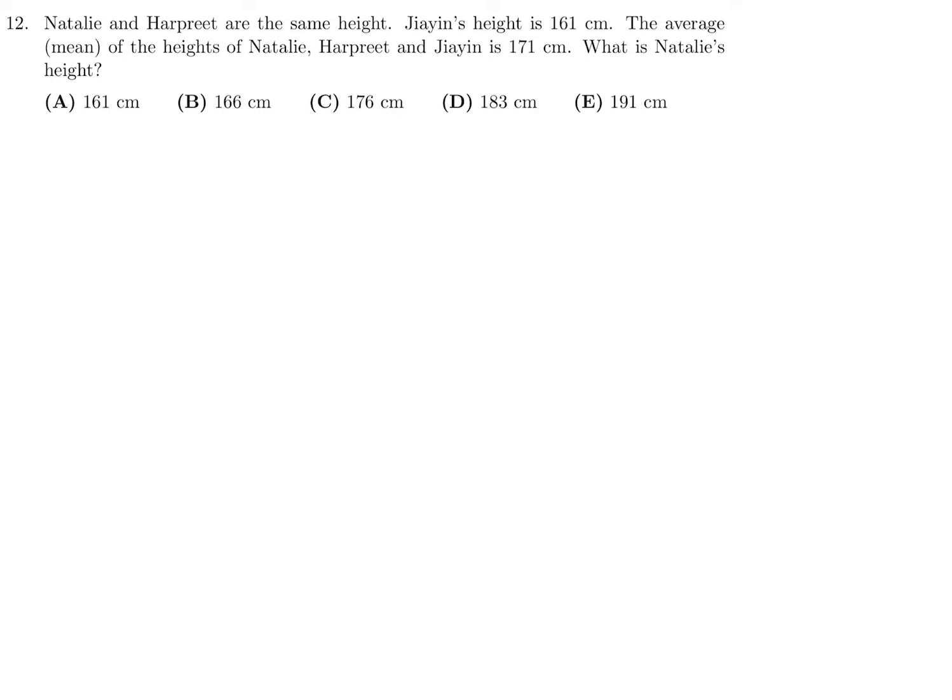Natalie and Harpreet are the same height. Jia Yin's height is 161. The average of the heights of Natalie, Harpreet, and Jia Yin is 171. What is Natalie's height? Natalie and Harpreet, I will give x to represent their height. Jia Yin is 161. The average is calculated by adding and dividing by the number of people, which in this case is 3. They told me that the average is 171. That means 2x plus 161 would be 3 times 171, which is 513. 2x will be 352, and therefore x is 176. x represents the height of Natalie, therefore number 12, the answer is C.